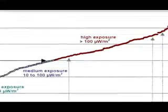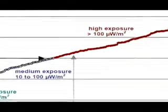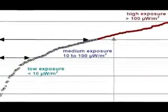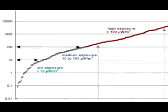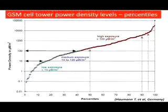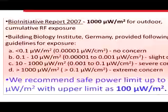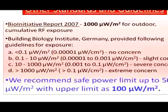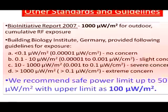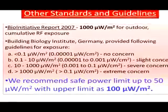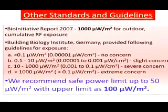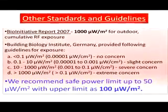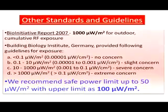In a Germany report, high exposure is defined as greater than 100 micro Watt per meter squared. What we have adopted is 9 into 10 to the power 6 — that is 90,000 times more than this, and we are saying it is safe. There is also the BioInitiative Report, which recommends 1,000 micro Watt for outdoor cumulative RF exposure. Why outdoor? Because indoors you are exposed 24 hours while outdoors you are moving around. Even that is 1,000. What we have adopted is 9,000 times more than that. They have written very clearly: severe concern between 10 to 1,000; extreme concern greater than 1,000. They recommend a safe power limit up to 50 as an upper limit for lifetime exposure.